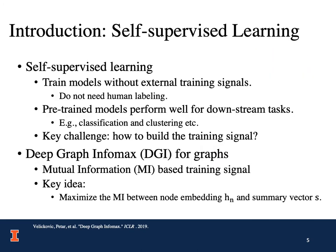Self-supervised learning for network representation learning has attracted a lot of research attention in recent years. The aim of self-supervised learning is to train models without external training signals, which means it does not need human labeling. A lot of recent studies have shown that pre-trained models perform well for downstream tasks. A key challenge of self-supervised learning is how to build the training signal.